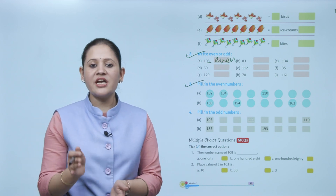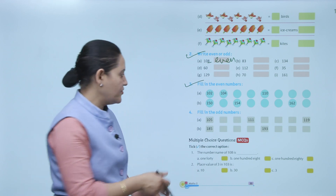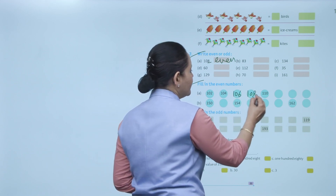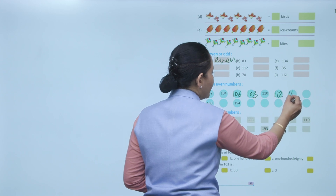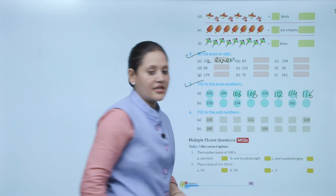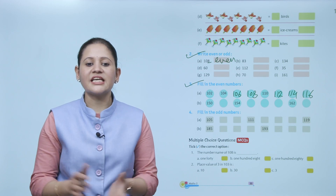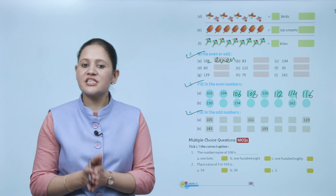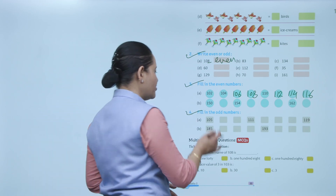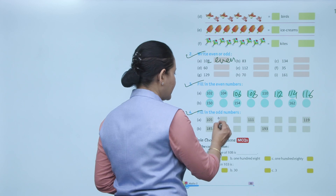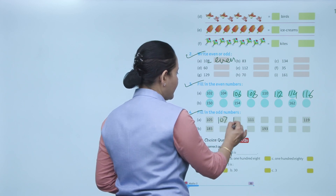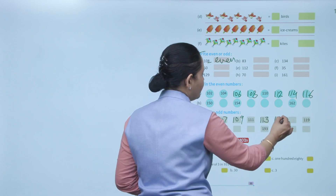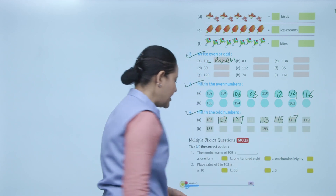Next: fill in the odd numbers. First is 105 — if we add two, we get 107, then 109, 113, 115, 117, and 119.